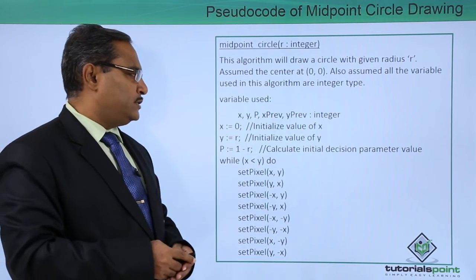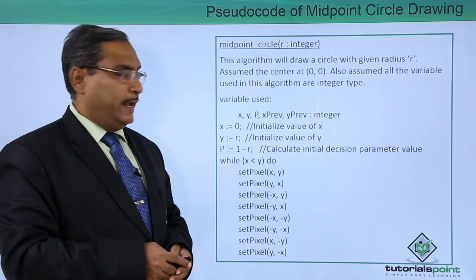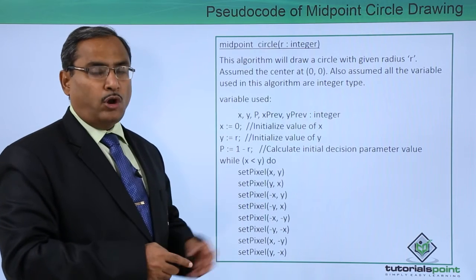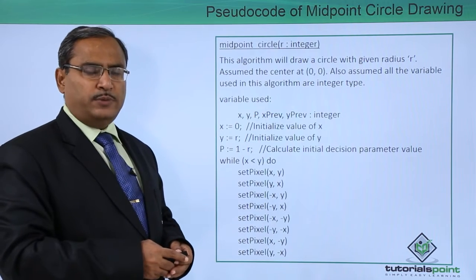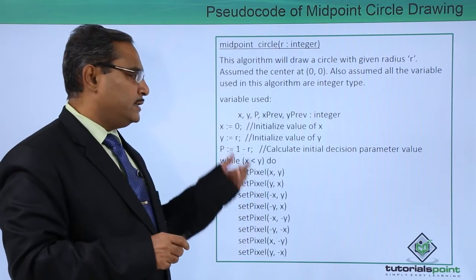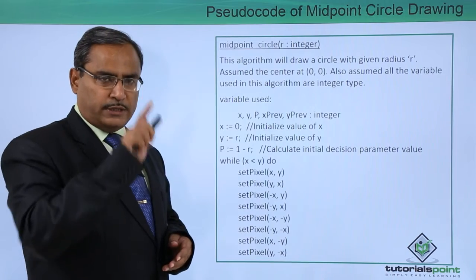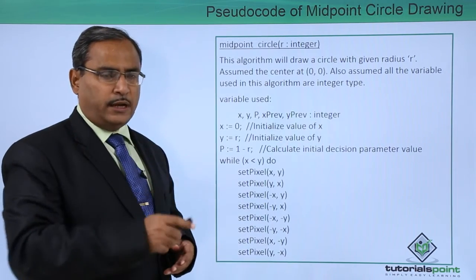Variables used are x, y, p, xPrev, yPrev, all of them are of integer type. At first, we are putting x equals 0 and y equals R. That is the topmost point of the circle, which we discussed in the earlier video.